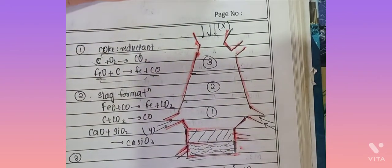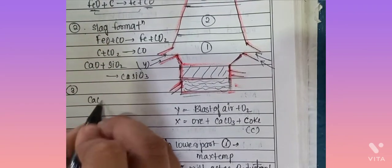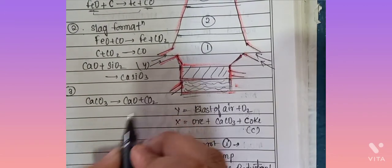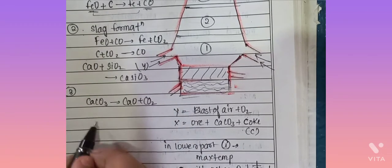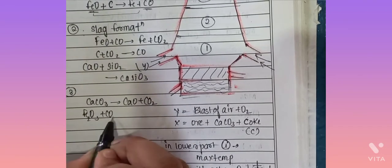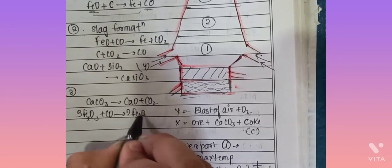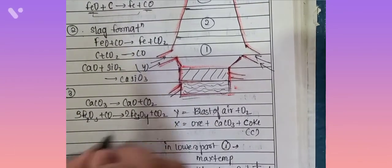In the third region, CaCO3 decomposes to CaO and CO2 is released. Coke acts as a reductant. FeO with Fe2O3 reacts with CO to give Fe3O4, which is a mixture of Fe2O3 and FeO, and carbon dioxide is released.